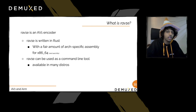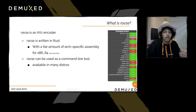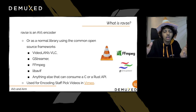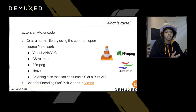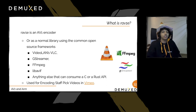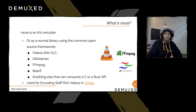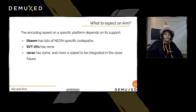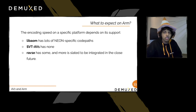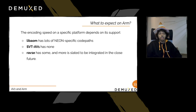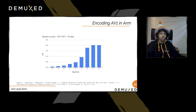rav1e can be used as a command-line tool and is already available in almost all distros. It has support in VLC, FFmpeg as a library, libheif (for next-generation image formats), and C and Rust APIs. Notably, Vimeo uses rav1e in production for staff pick videos. Regarding ARM support: libaom has lots of NEON-specific code paths, SVT-AV1 has almost zero ARM optimization, and rav1e has partial ARM paths with some already integrated.